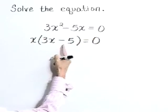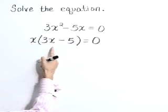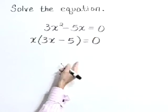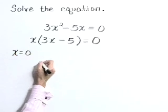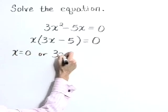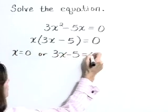Now, if the product of two things is 0, then one or the other must be 0, or both. So let's set x equal to 0, or 3x minus 5 is equal to 0.